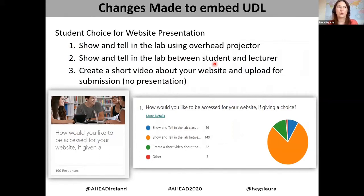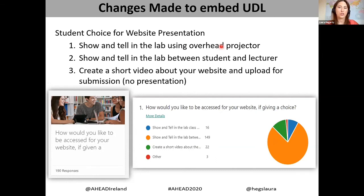One big task was giving students a choice in how they presented their websites. I had 259 students who all designed websites using WordPress, and when presenting their website for 40 percent of their grade at year end, I gave them three choices. I created a forum and 190 students participated. The first choice was a show and tell using an overhead projector, for students with more confidence presenting to the group. The second was a workstation-to-workstation assessment within a lab environment.